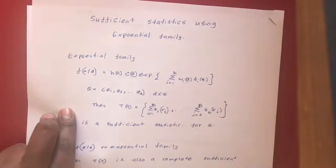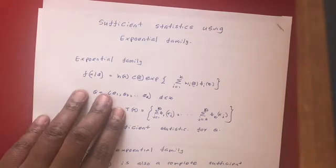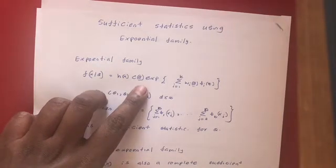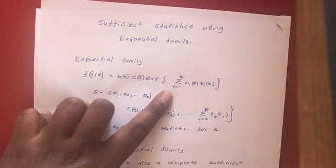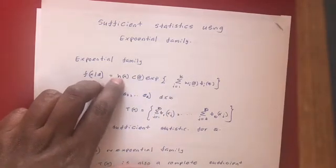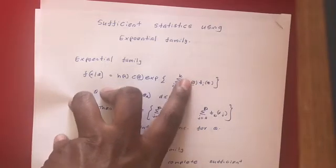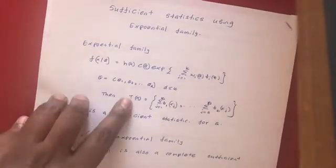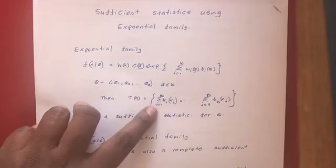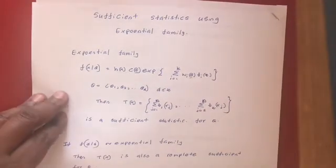A particular PDF — that means a particular probability density function or probability mass function — belongs to an exponential family if your PDF can be represented in the form: h(x) times c(θ) times exponential of the summation of w_i(θ) times t_i(x). Here h(x) is a function of x, c(θ) is a function of θ, w_i(θ) is a function of θ, and t_i(x) is a function of x. If this is the case, then T(x) — which is [t_1(x), ..., t_k(x)] — will be a sufficient statistic for θ.